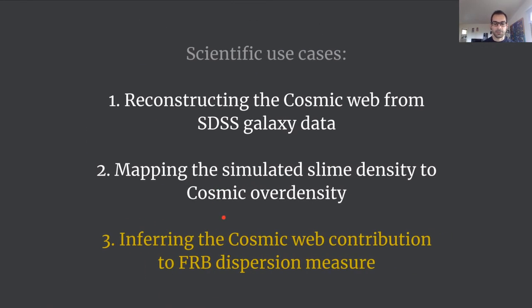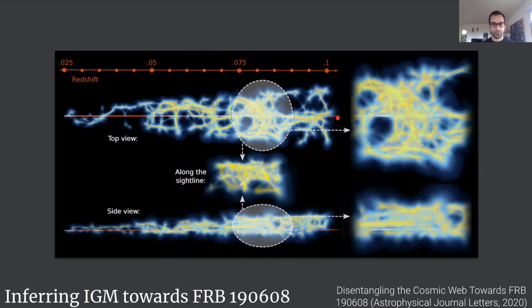Finally, a third task or use case we've been able to do is inferring the cosmic web contribution to a fast radio burst dispersion measure. Fast radio burst is a flash of very high energy radiation that comes from somewhere in the universe. In this case it comes from the right side of this red sight line and then it travels towards us towards Earth on the left here. Using Polyform we were able to show that it is really the cosmic web in between the source of the fast radio burst and Earth that corresponds to the dispersion measure as the astronomers have observed it. This study has been also published recently in the Astrophysical Journal Letters.